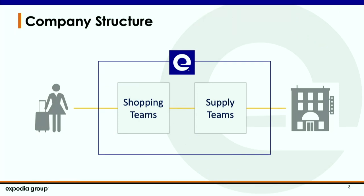The whole company can be divided into two large separate organizations. On one side we have our travelers who interact with our site, and on the other we have our suppliers — the hotels and airlines who give us our data. We have shopping teams that provide the customer experience and supply teams, but today I'm just going to be talking about the shopping side.